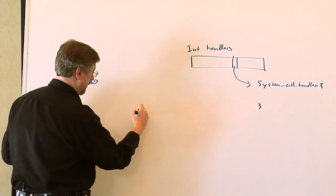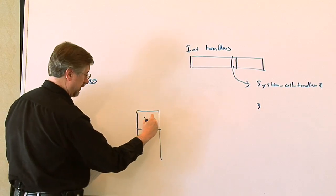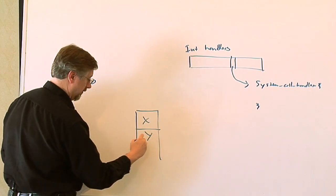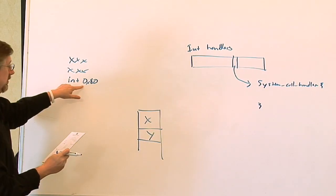Looking at what happens on the stack, you might have a stack frame for function X and another one for function Y, and then function Y makes the system call through this code here.